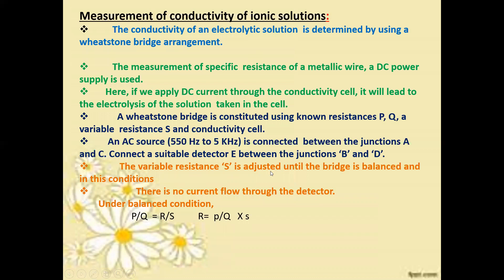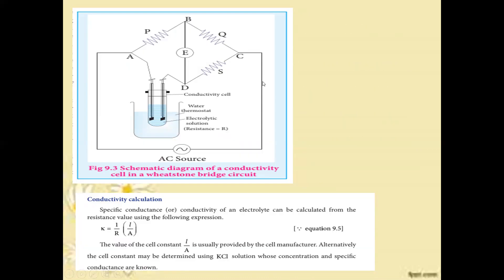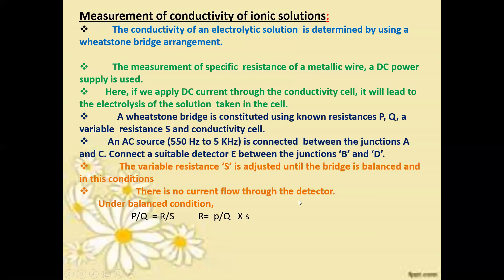The variable resistance S is adjusted until the bridge is balanced. A detector is connected to detect the balance condition. When balanced, no current flows through the detector. At the balanced state, we can write p/q = r/s.